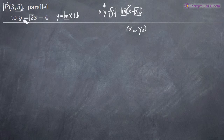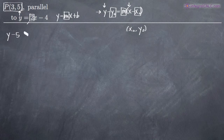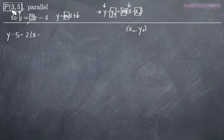Given that information, we can go ahead and write the equation of our new line in point-slope form as y minus 5 — we get the 5 from the y-coordinate in our point — which is equal to the slope, 2, times x minus the x-coordinate in our point, which is 3. So we get y minus 5 equals 2 times (x minus 3). This is the equation in point-slope form.